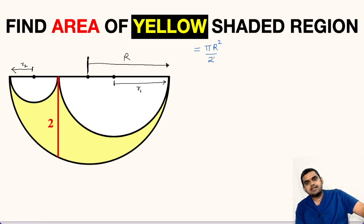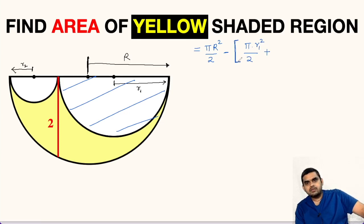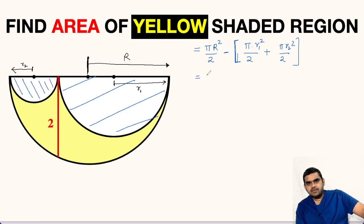We subtract the area of the smaller semicircles. So we write minus, in brackets, π times r1 squared divided by 2, plus π times r2 squared divided by 2. This gives us the area expression for the yellow shaded region.